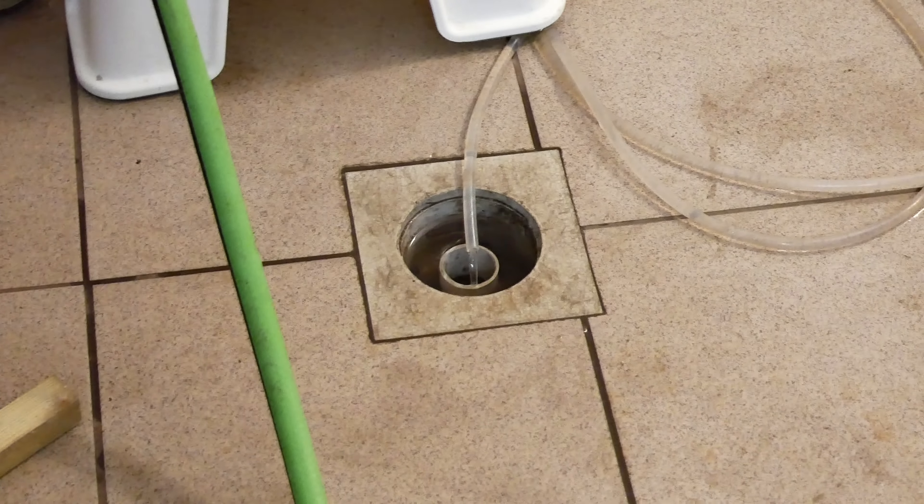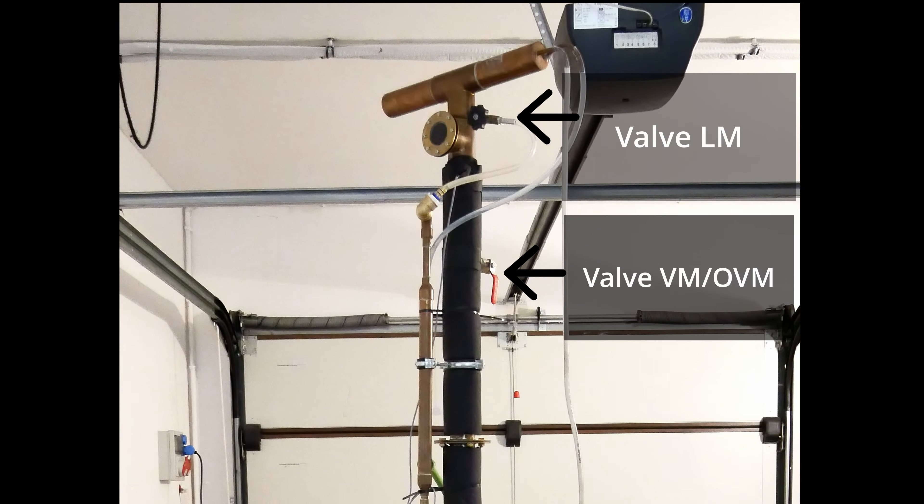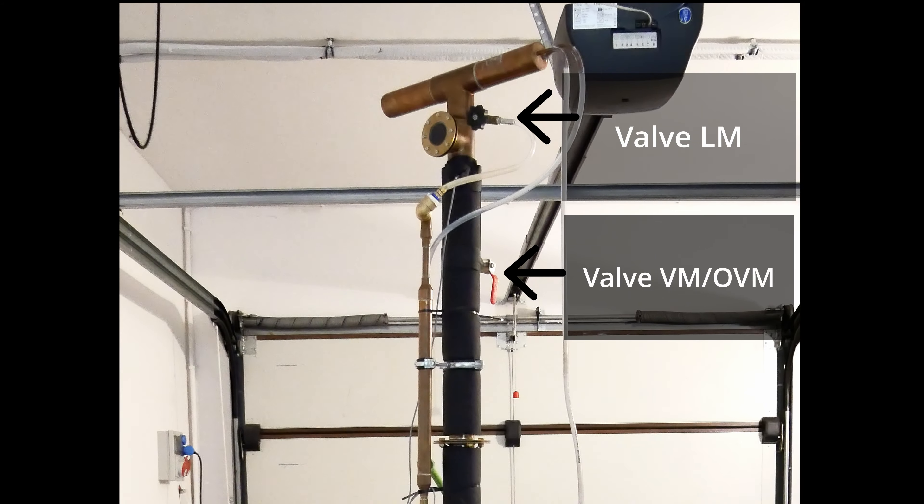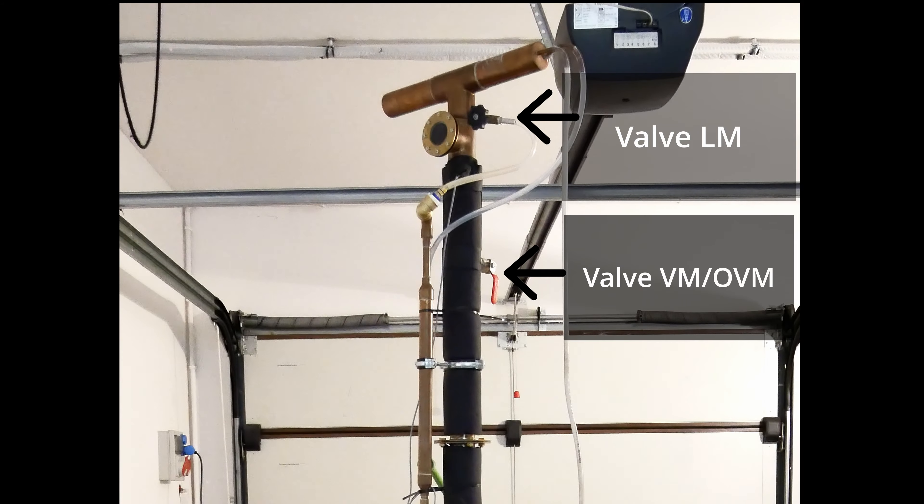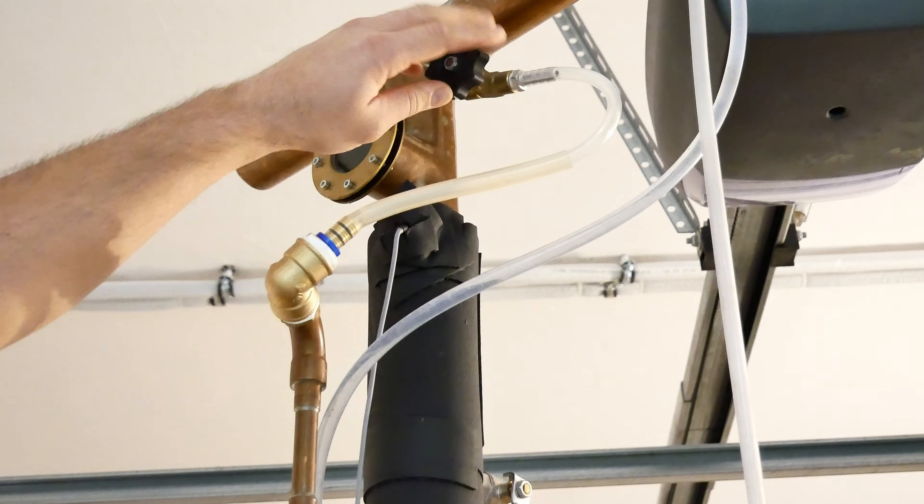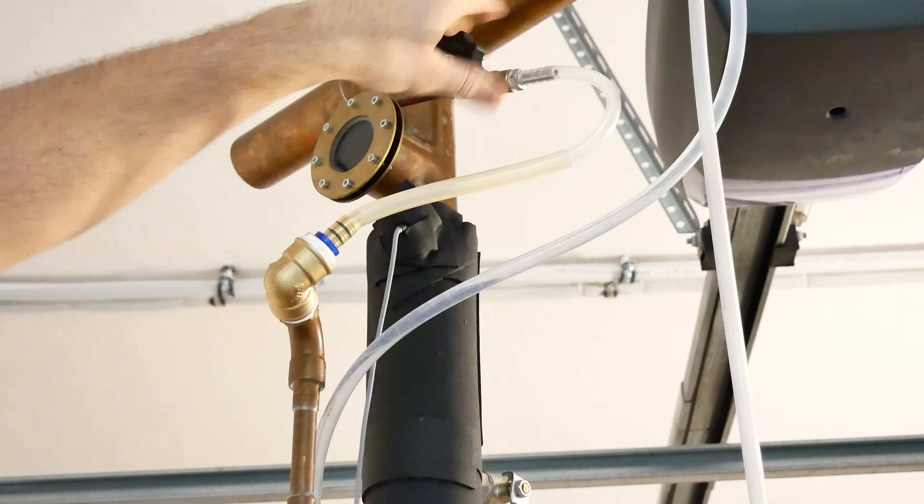Before the still reaches the right temperature we have a moment for some theory. The thor column that I have can be used to obtain alcohol with a strength of 96%, then we receive pure alcohol through the OVM valve which means lower vapor management, or we can obtain flavored distillates on it through the LM valve which means liquid management. When the LM valve is open to the maximum then the column works the same way as a simple distiller.